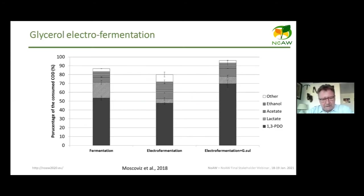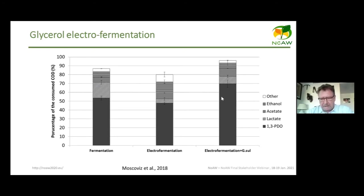To illustrate this: different products can be obtained through classical dark fermentation versus dark fermentation with electrodes — the metabolic routes differ. Combining electro-fermentation with specific electro-fermentative bacteria can further increase this differentiation in product output.